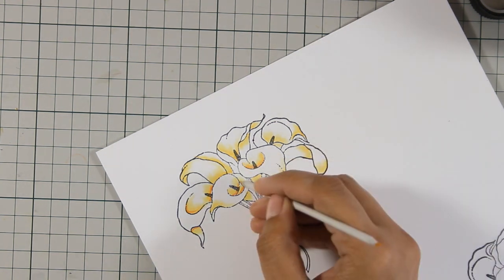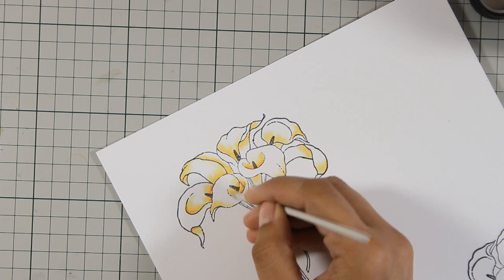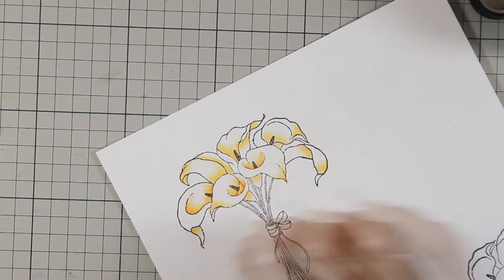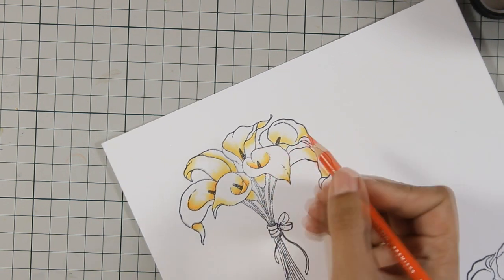This time I am using a thinner tip stamp tool, and as I am blending out the red color, I am not going as far as I did with the orange color.